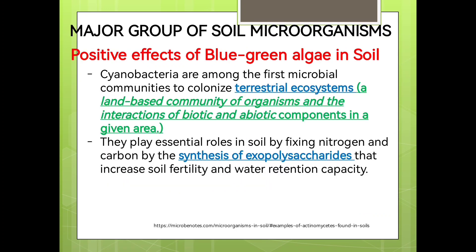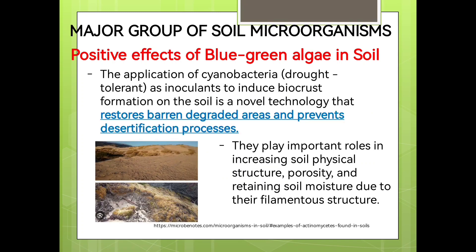Cyanobacteria are among the first microbial communities to colonize terrestrial ecosystems — land-based communities of organisms involving the interaction of biotic and abiotic components in a given area. They play essential roles in soil by fixing nitrogen and carbon, and by synthesizing exopolysaccharides that increase soil fertility and water retention capacity. Some drought-tolerant cyanobacteria species are used as inoculants to induce bio-crust formation in the soil.